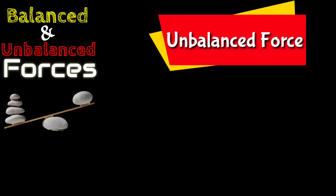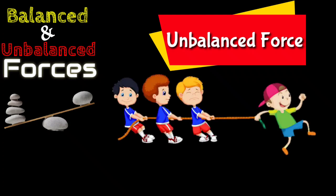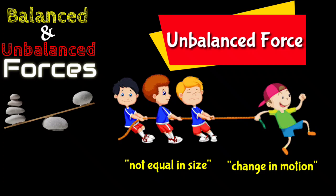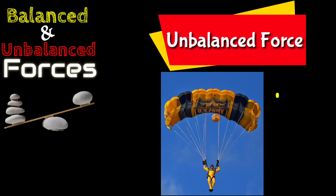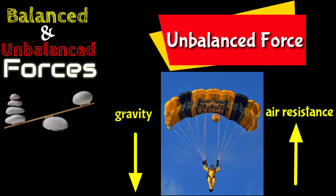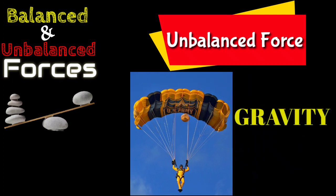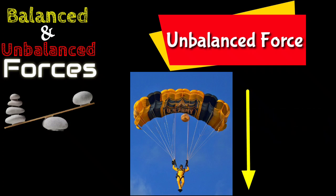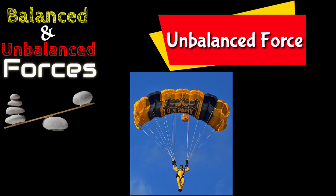Unbalanced forces. We can say that the forces are unbalanced when two forces acting on an object are not equal in size. Unbalanced forces cause a change in motion by changing the object's speed or direction. For example, the man and the parachute are slowly falling to the ground. The forces acting on the parachute are air resistance and gravity. Gravity is a bigger force than the air resistance. Since the forces are not equal in size, the forces are said to be unbalanced.